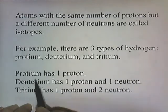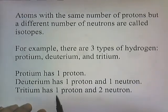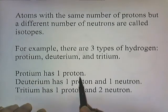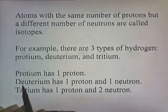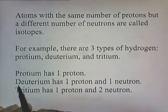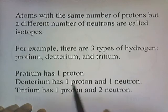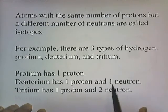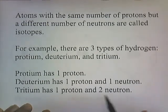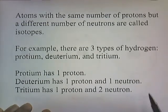The names relate to what's in the nucleus. Protium implies just a single proton. Deuterium — 'deu' is a Greek prefix for two — so two nucleons. Tritium — 'tri' means three — so there are three nucleons total.